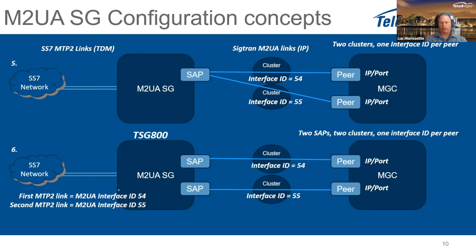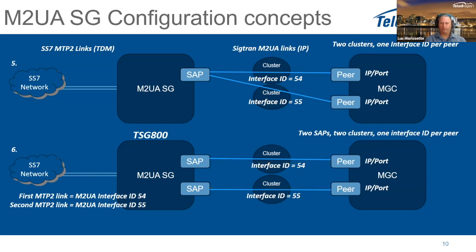A sixth mode uses two MTP2 links but with two different local ports, possibly on different VLANs with different IP addresses and subnets, each configured to send traffic to two different destinations. These would normally be different elements on the destination side. Combinations of these modes are also possible — for example, each cluster could have multiple links, two IPs per destination, and so on.